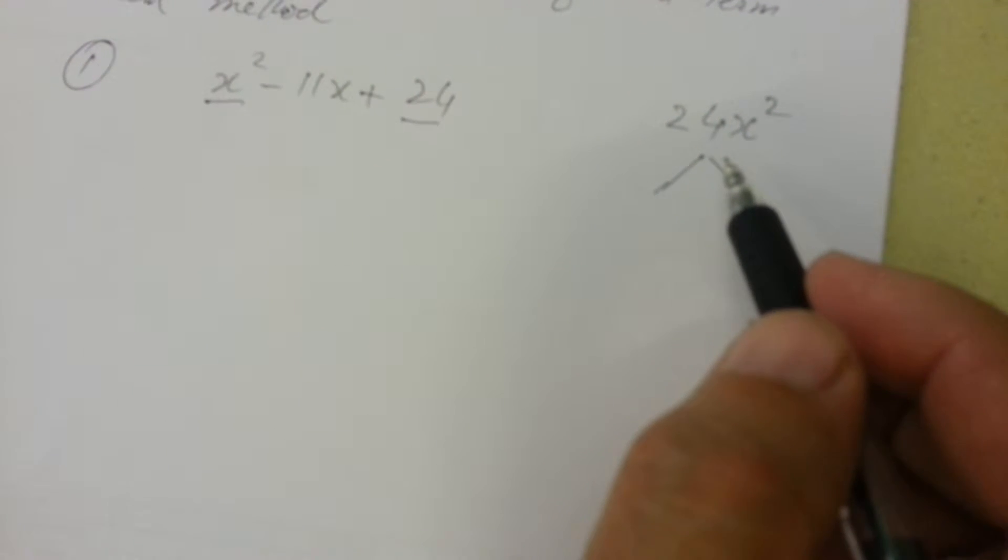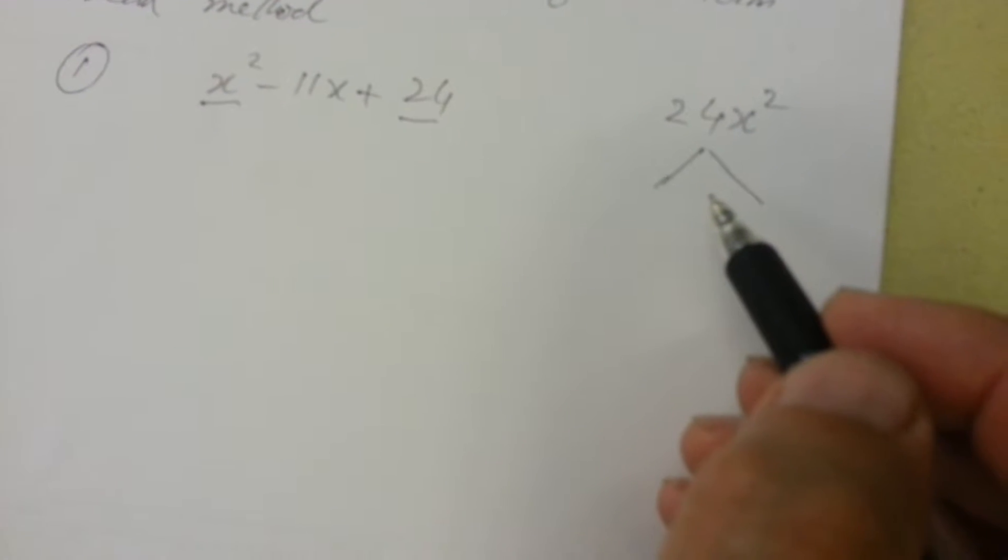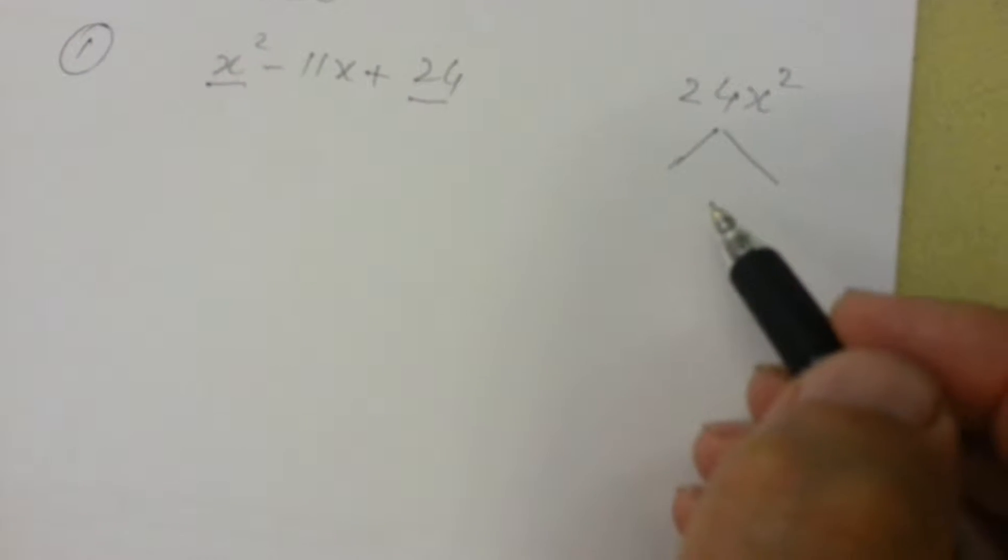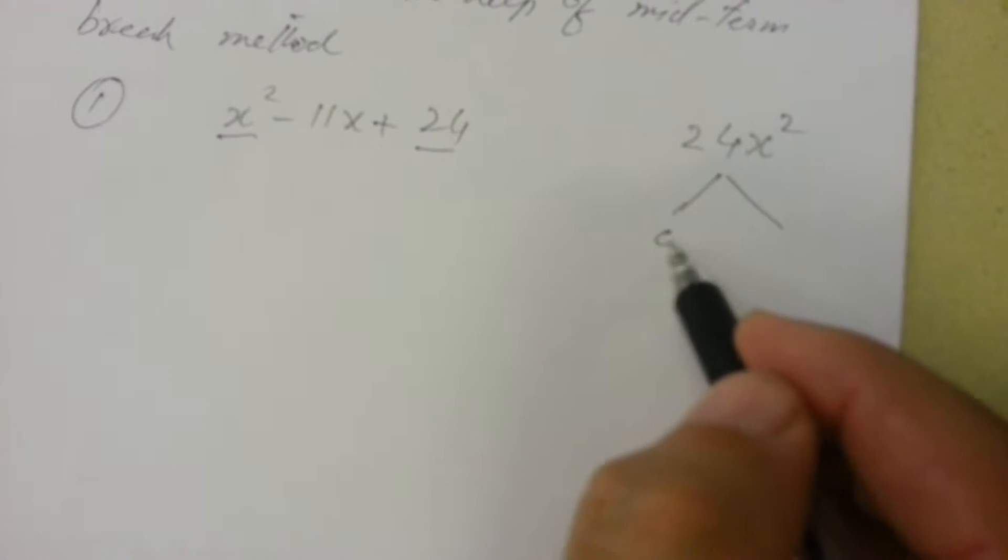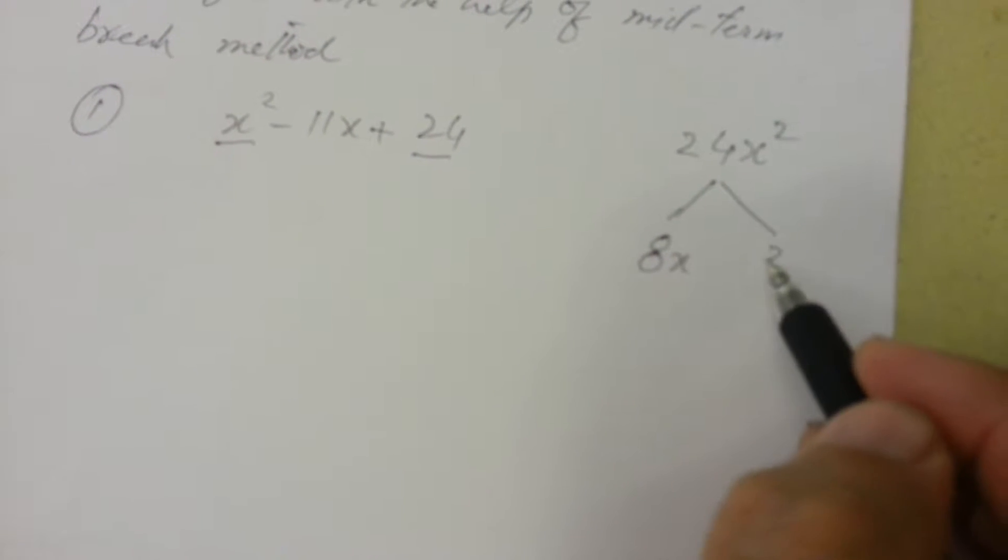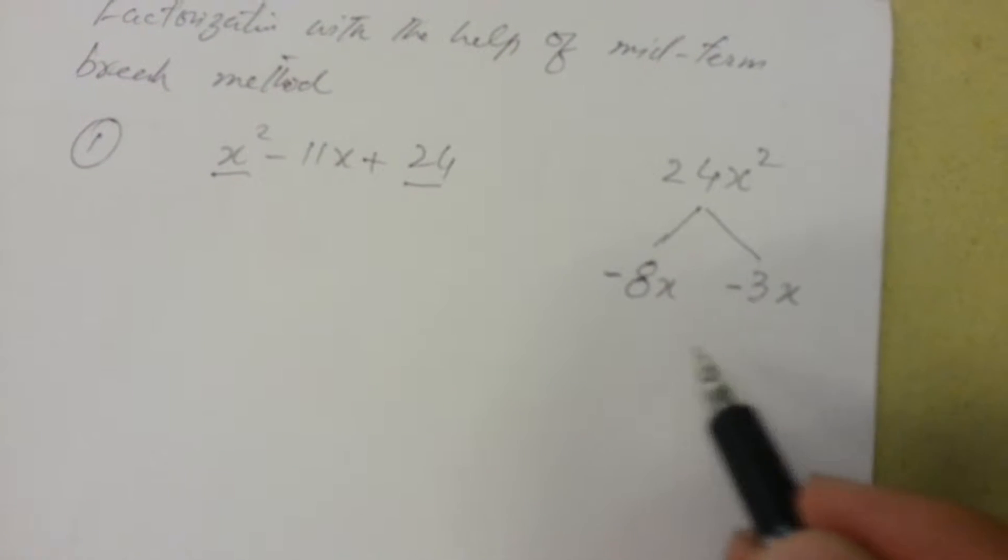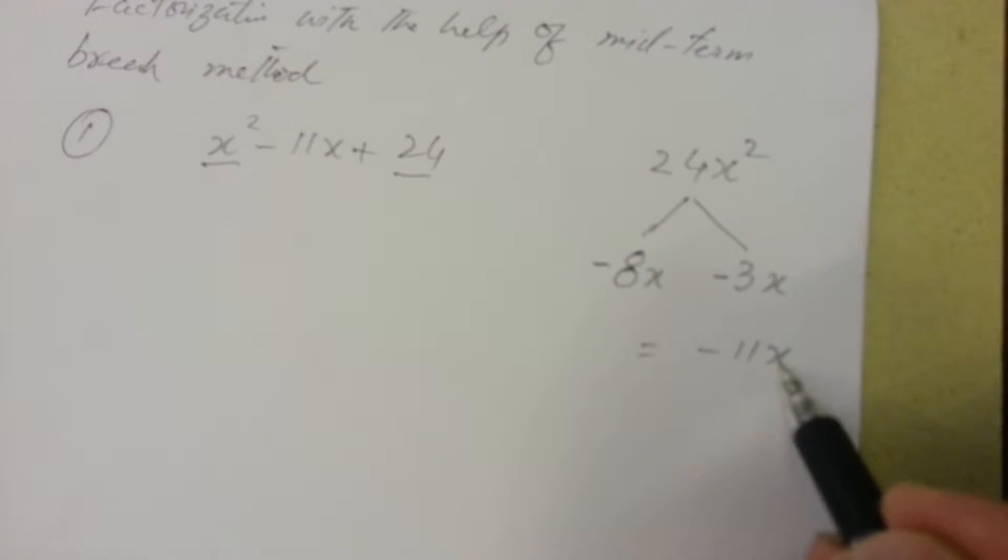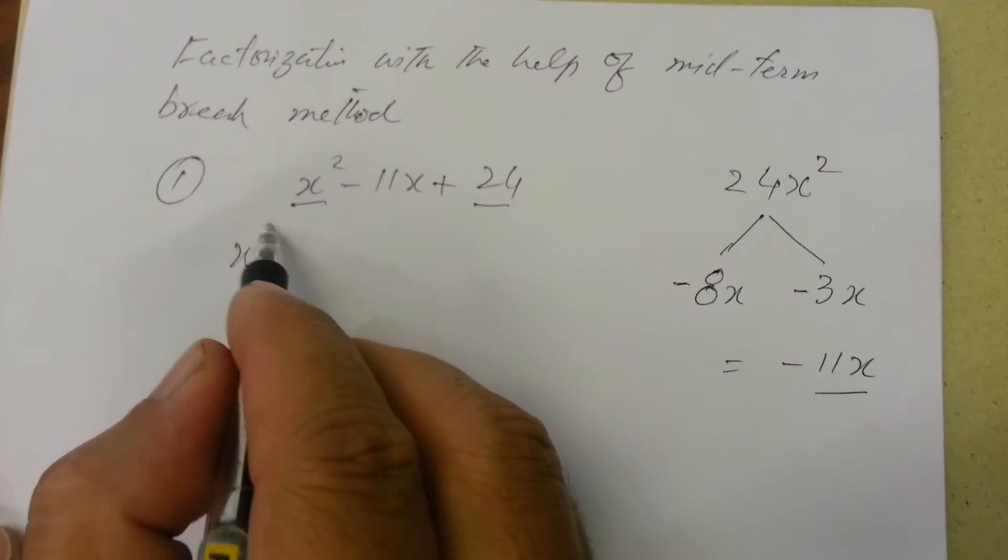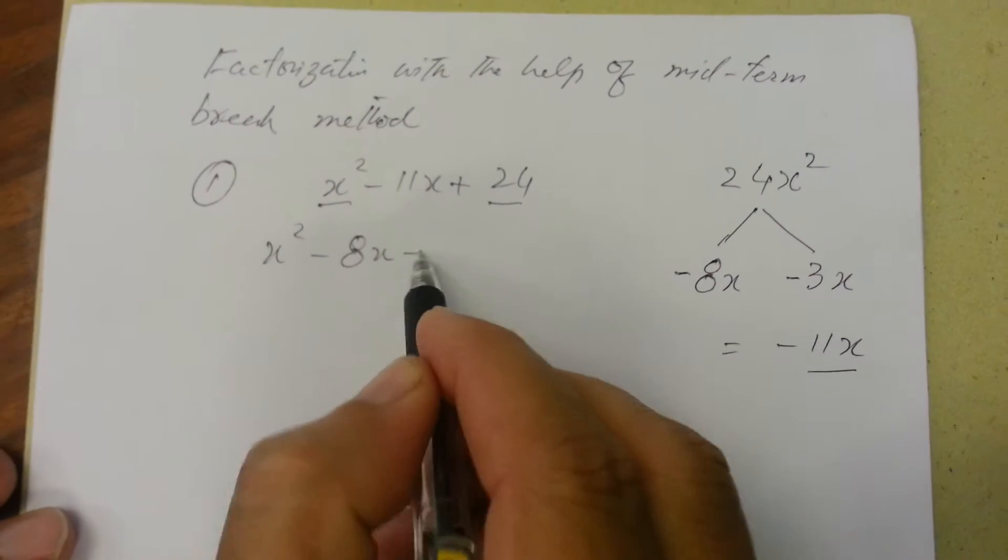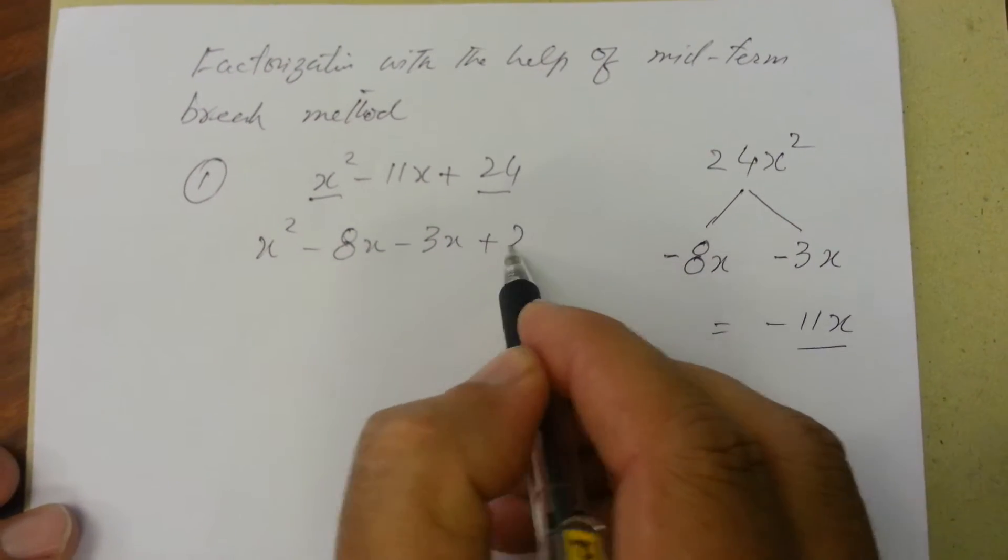and the middle term should be minus 11x on subtraction or addition. We have two terms 8x and 3x. By putting a negative sign with each other we will get minus 11x. So x squared minus 8x minus 3x plus 24